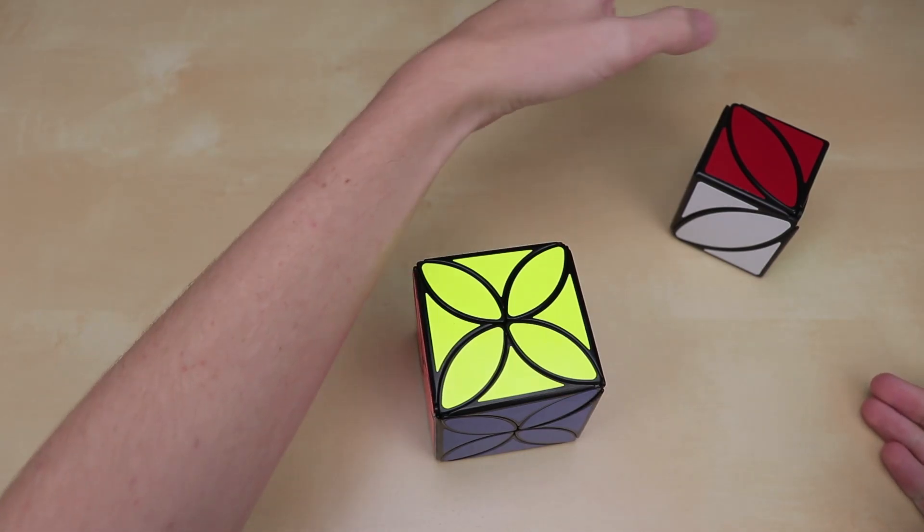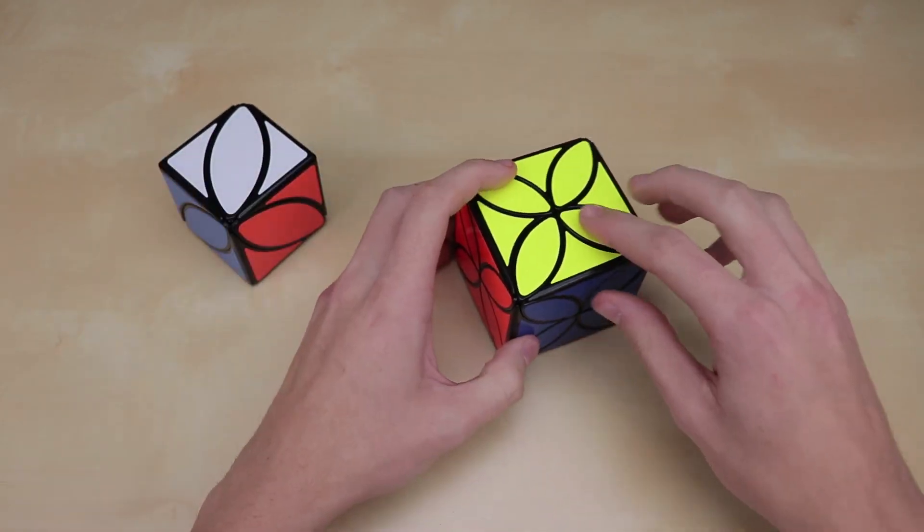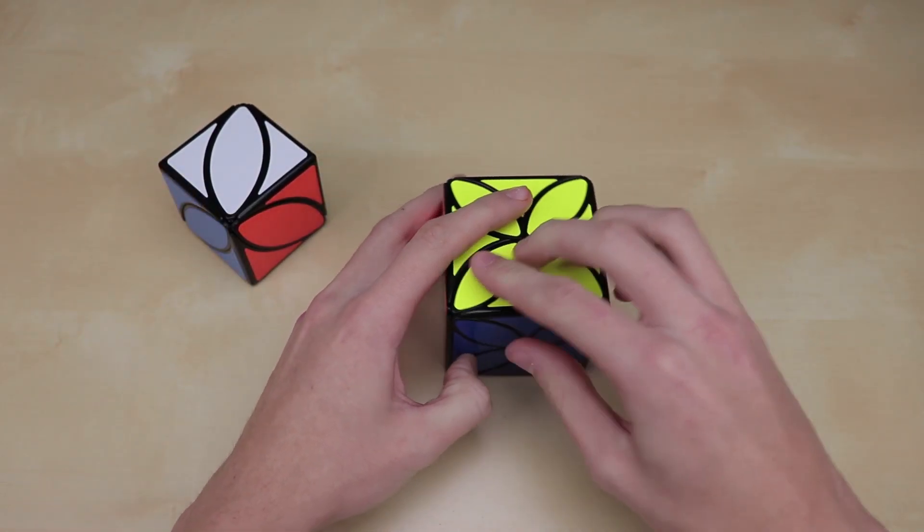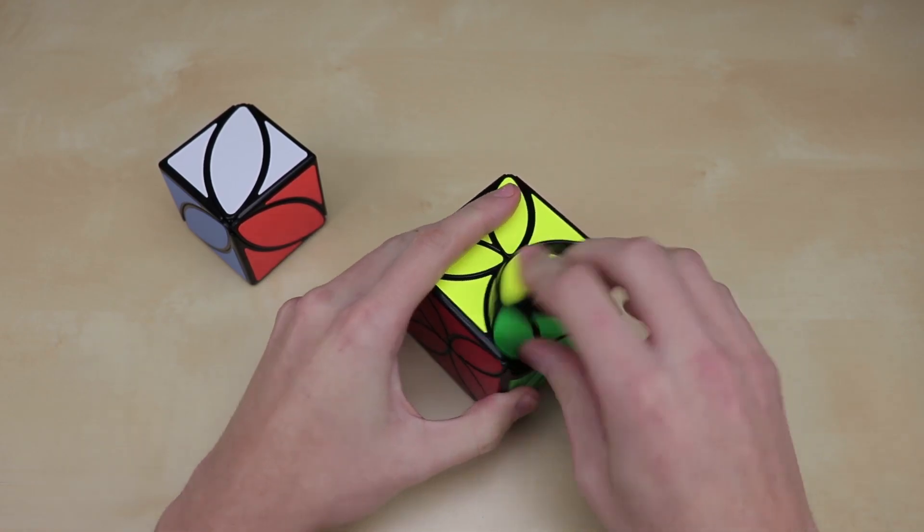So although it looks pretty similar to this cube, I believe it actually functions totally different. So this one is a corner-turning puzzle. However, this one is an edge-turning puzzle. And wow, it actually looks like it turns really nicely. It's also actually really big.